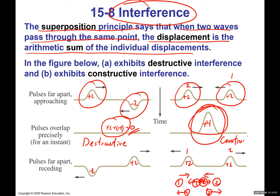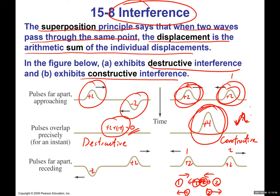Constructive and destructive interference are the two extremes. When two positive amplitudes — crest and crest, or trough and trough — overlap, you get constructive interference. When a crest meets a trough or vice versa, you get destructive interference. In between, when a crest meets some intermediate part of another wave, you get partial interference. Destructive and constructive are the two extremes.